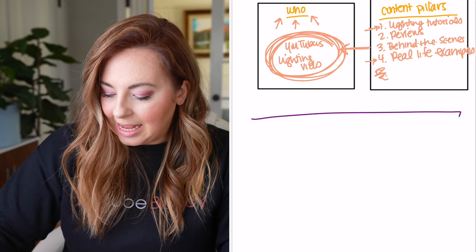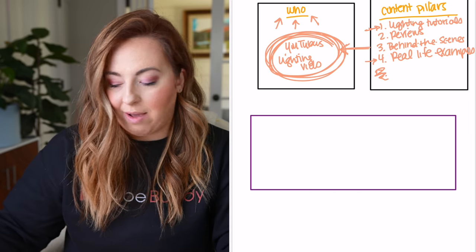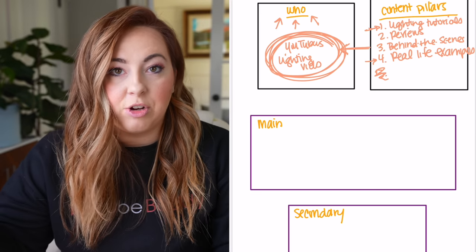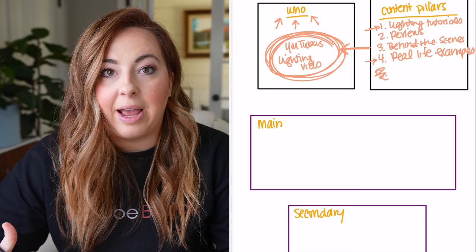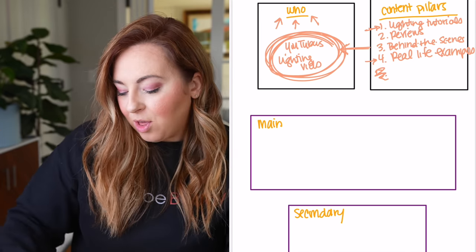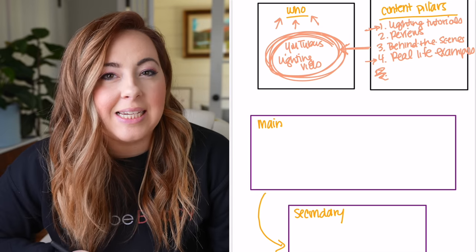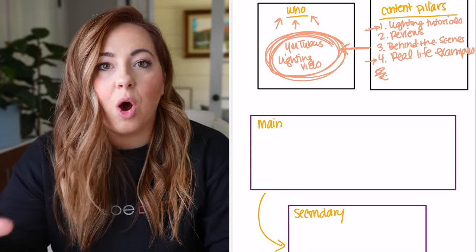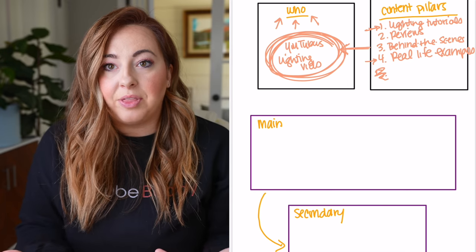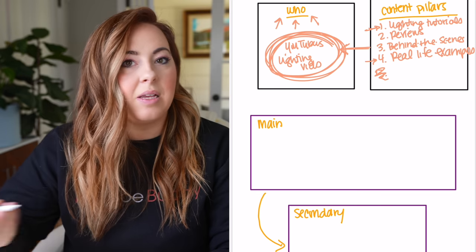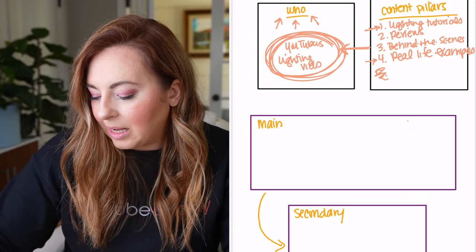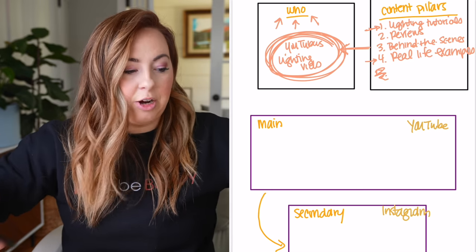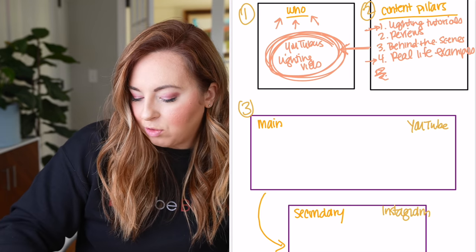The next thing you need to keep in mind is that you want to have one main content creation platform and one secondary content creation platform. One main platform is where you're really putting most of your efforts, and then one secondary where you can take the content created on the main platform and feed it into the secondary platform pretty easily. I don't ever want you to focus on two platforms at a time. For me, my main platform is YouTube and my secondary platform is Instagram.